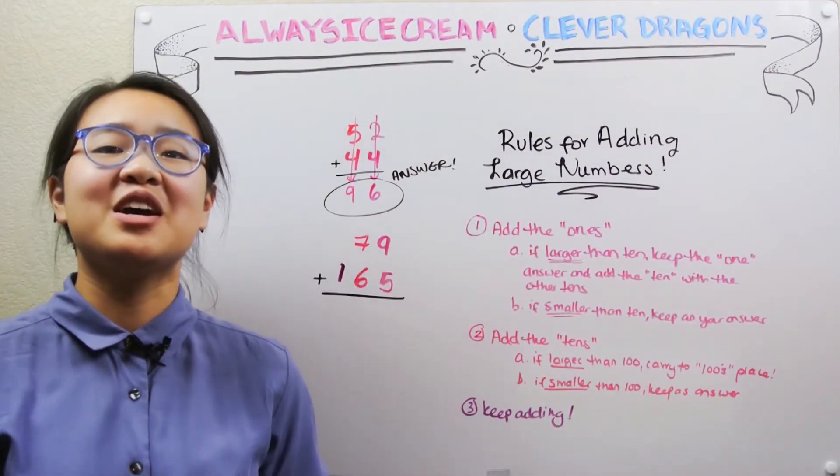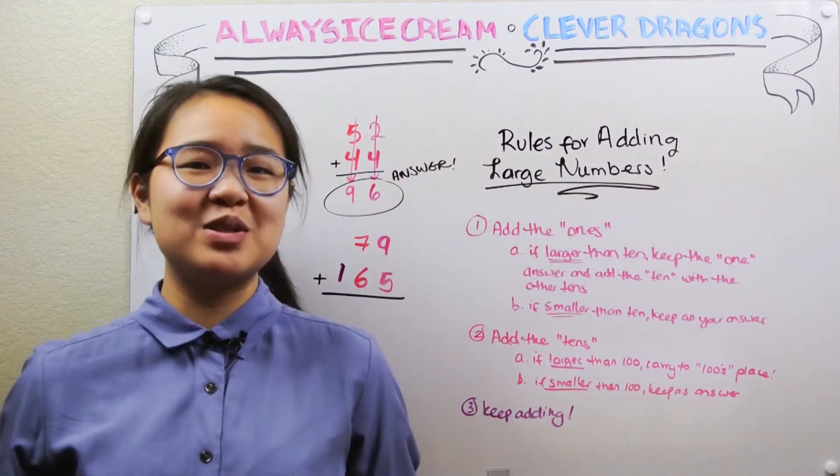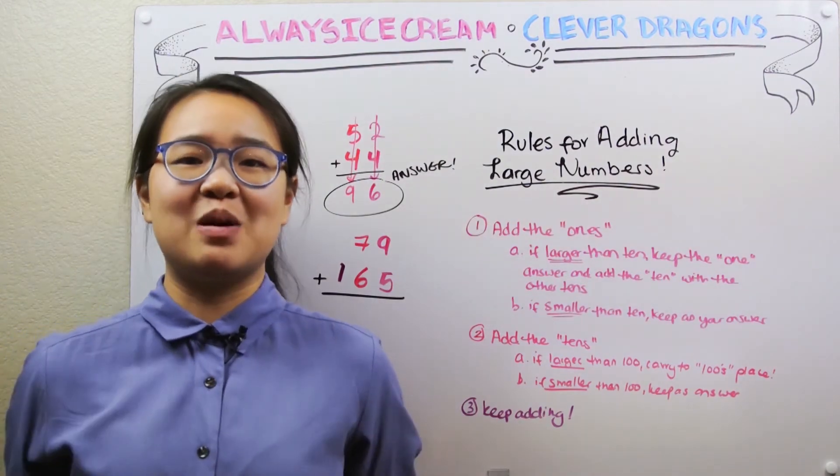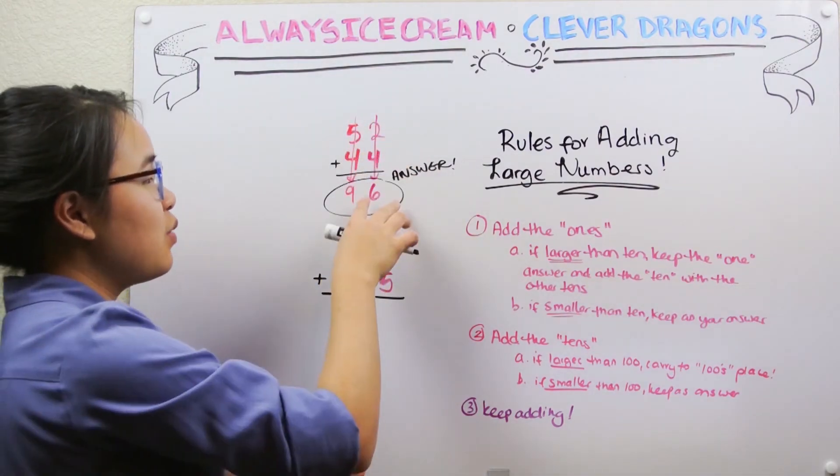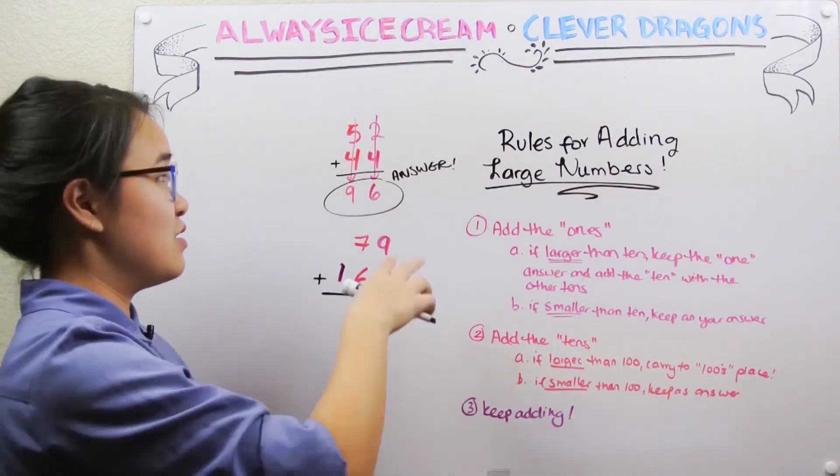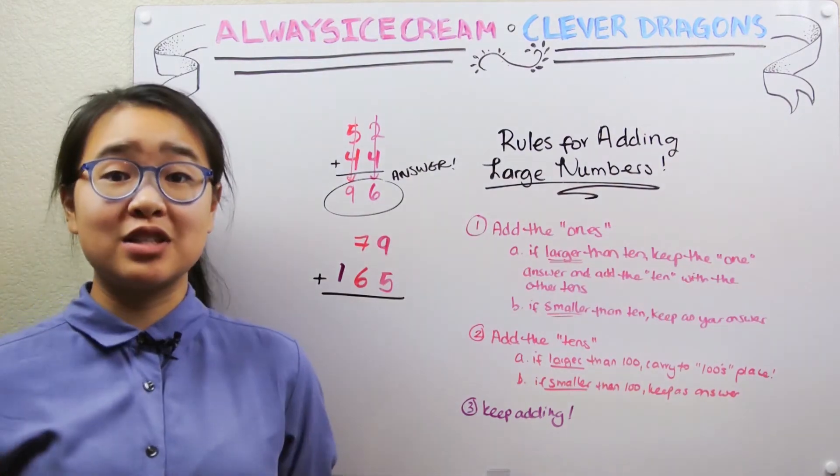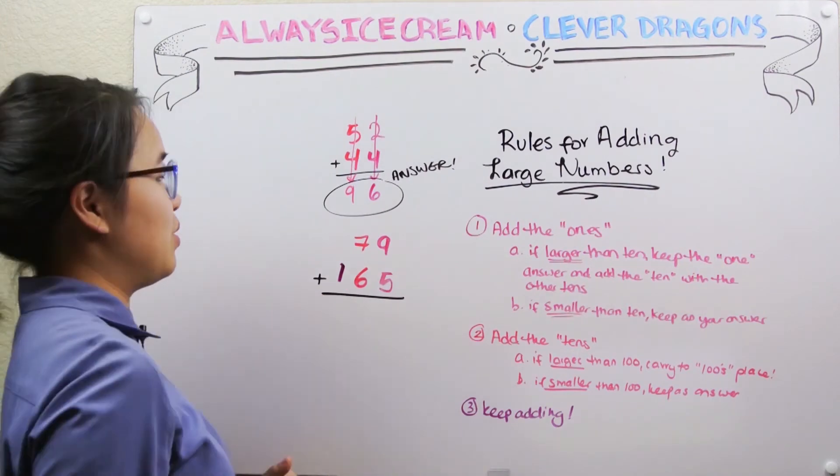And there you have it. Those are your techniques for adding larger numbers. If you ever get confused, you can always go back to your rods and blocks to help you figure things out, but what you mainly need to remember is just keeping things in their place. So you add the ones place and it gives you your ones. You add the tens place and it will give you your tens.